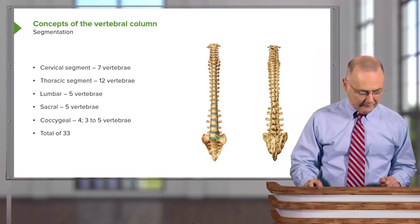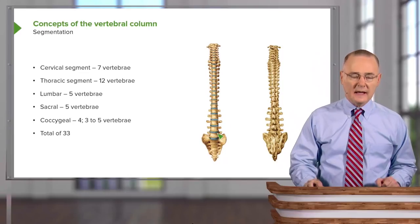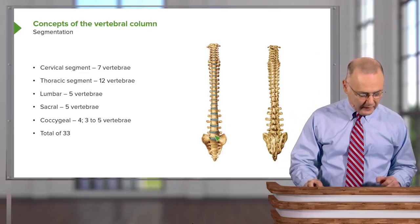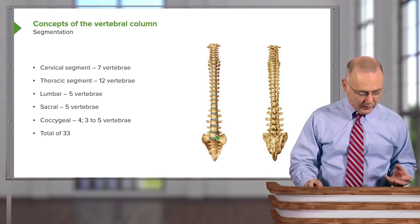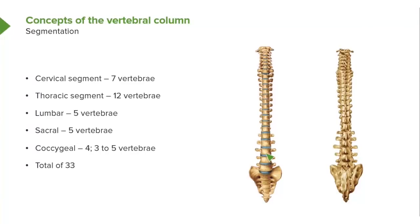Starting at L5, the fifth lumbar vertebra, and counting upward: 5, 4, 3, 2, and then 1 — giving us the five lumbar vertebrae. Posteriorly, beginning with the last one, we count 5, 4, 3, 2, 1.